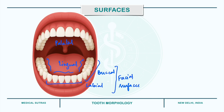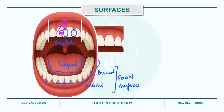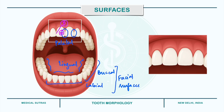Next we have proximal or proximate surfaces, which include the surfaces facing towards the adjacent teeth in the same dental arch. The proximal surfaces include the mesial and distal surfaces. Mesial surfaces are the ones facing towards the median line, and distal surfaces are the ones away from the median line. So if we consider the upper central incisor, this would be the mesial surface and this would be the distal surface. Lastly, we have occlusal surfaces — these include surfaces of molars and premolars that come into contact or occlusion with the teeth of the opposite jaw during closure of the mouth.